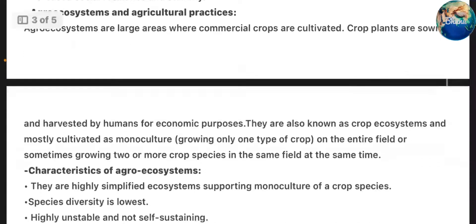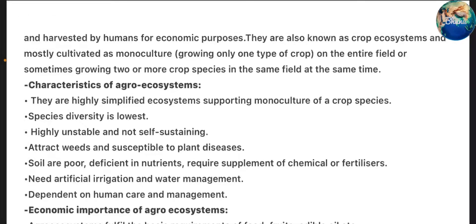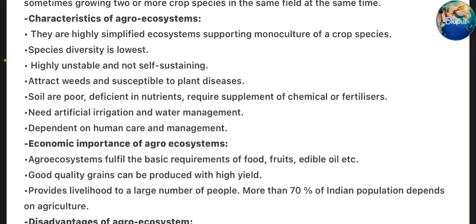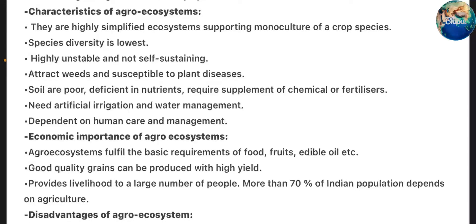Agro-ecosystems and agriculture practices: Agro-ecosystems are large areas where commercial crops are cultivated. Crop plants are sown and harvested by humans for economic purposes. They are also known as crop ecosystems and are mostly cultivated as monoculture — growing only one type of crop on the entire field, or sometimes two or more crop species in the same field at the same time. Characteristics of agro-ecosystems: They are highly simplified ecosystems supporting monoculture of a crop species. Species diversity is lowest; they are highly unstable and not self-sustaining. They attract weeds and are susceptible to plant diseases. Soils are poor and deficient in nutrients, requiring supplements of chemicals or fertilizers, artificial irrigation and water management, and are dependent on human care and management.